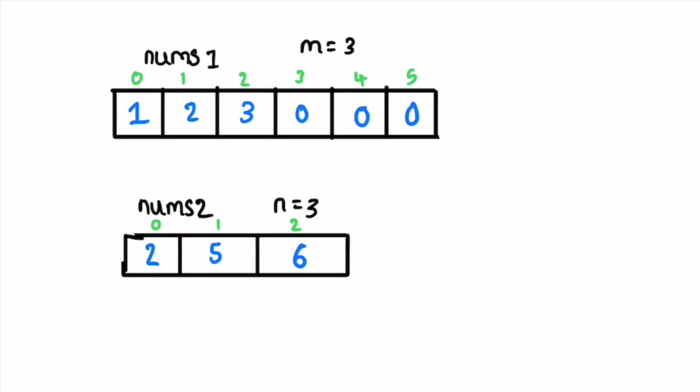Using the given example, this is nums1 and this is nums2. We have to merge the nums2 elements inside nums1 and sort it in ascending order. To sort the array in place, we need to use pointers to swap elements. We are going to access the elements from right to left so that we get the highest elements first, since both arrays are already sorted.